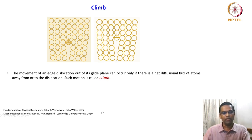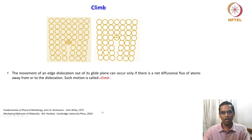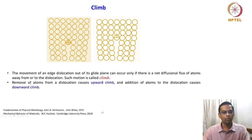Recalling previous climb slides, vacancies are attracted towards the dislocation core, and the atom goes to occupy that vacancy — meaning the extra half plane is going up, which is positive climb. Or the vacancy moves away from the core and atoms come in, meaning the dislocation climbs downward. The removal of atoms from the dislocation causes upward climb and the addition of atoms to the dislocation causes downward climb. Both are equally possible depending on the characteristic of the material.